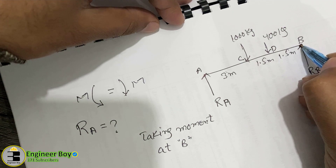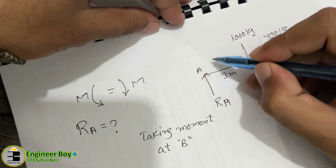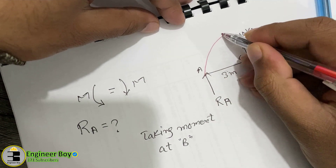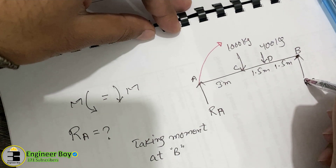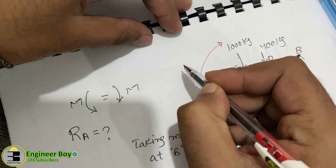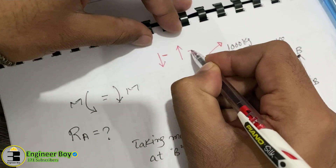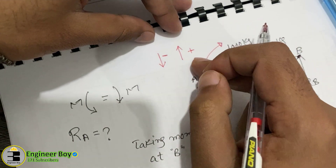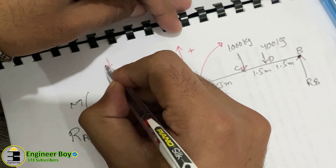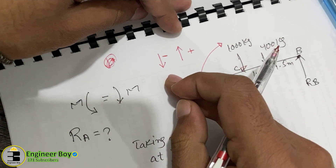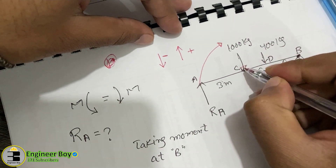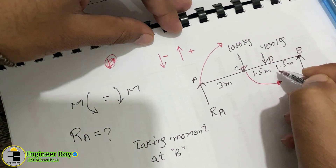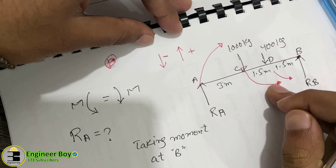Taking moment at B: the reaction at A creates a clockwise moment. My sign convention is: downward is minus, upward is plus. The 1000 kg load acts downward, creating a counter-clockwise moment about B. The 400 kg load also acts downward and counter-clockwise about B. So we have one clockwise force (RA) and two counter-clockwise forces.